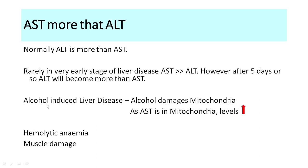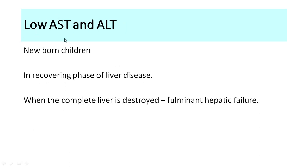Alcohol damages not only liver cells but also the mitochondria within them. Since AST is present in the mitochondria as well as the cytoplasm, mitochondrial AST adds to the total, making AST greater than ALT in alcohol-induced liver disease. In hemolytic anemia, RBCs are damaged — since AST is present in RBCs, AST levels will be high while ALT remains normal (no liver involvement). Similarly, muscle damage raises AST but not ALT, since muscles contain AST but not ALT.